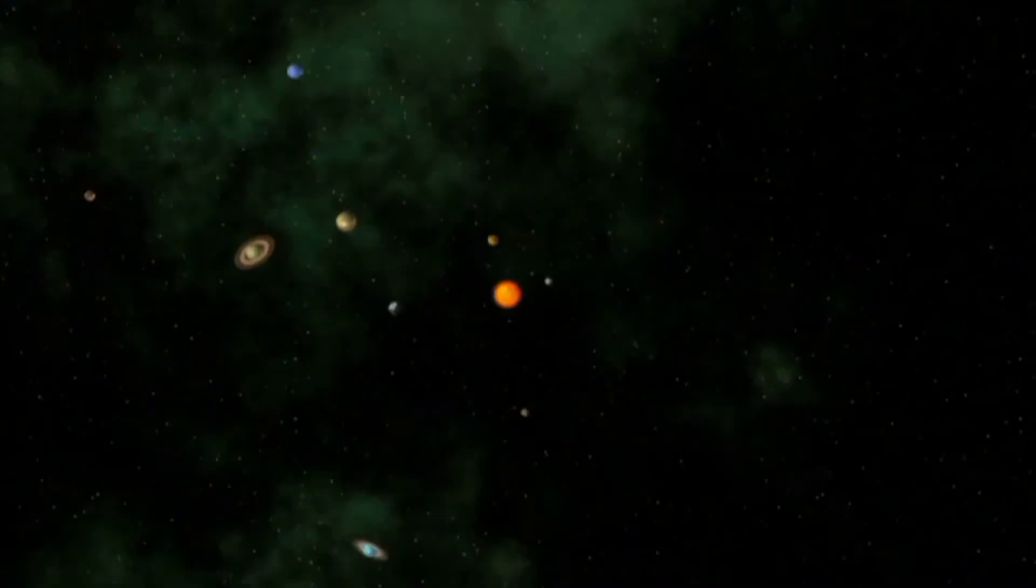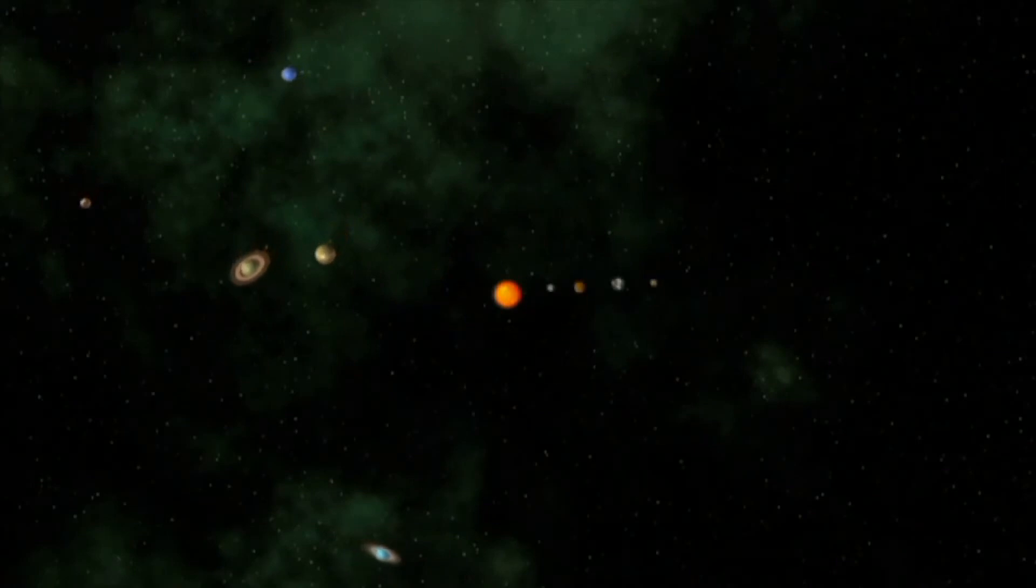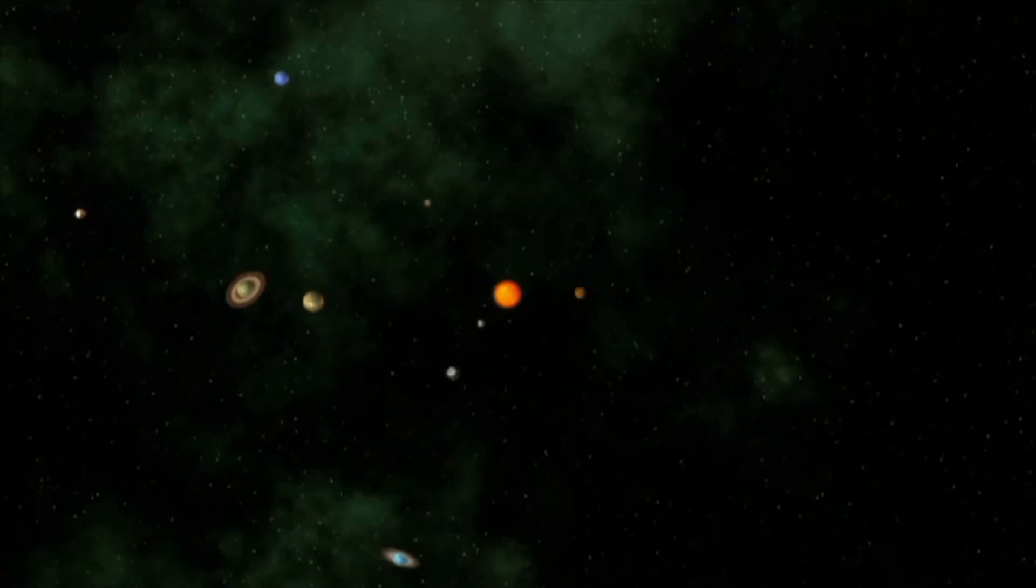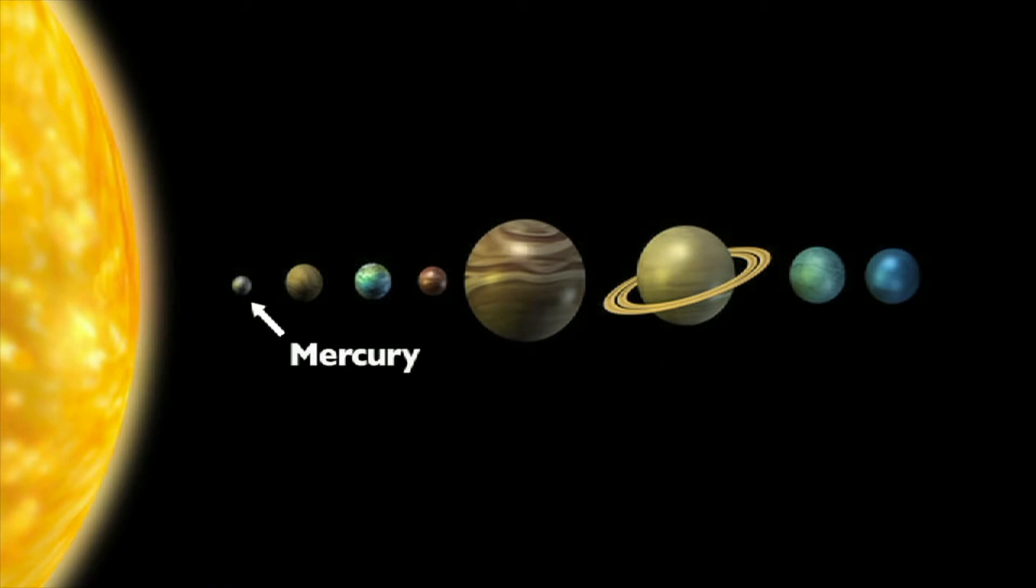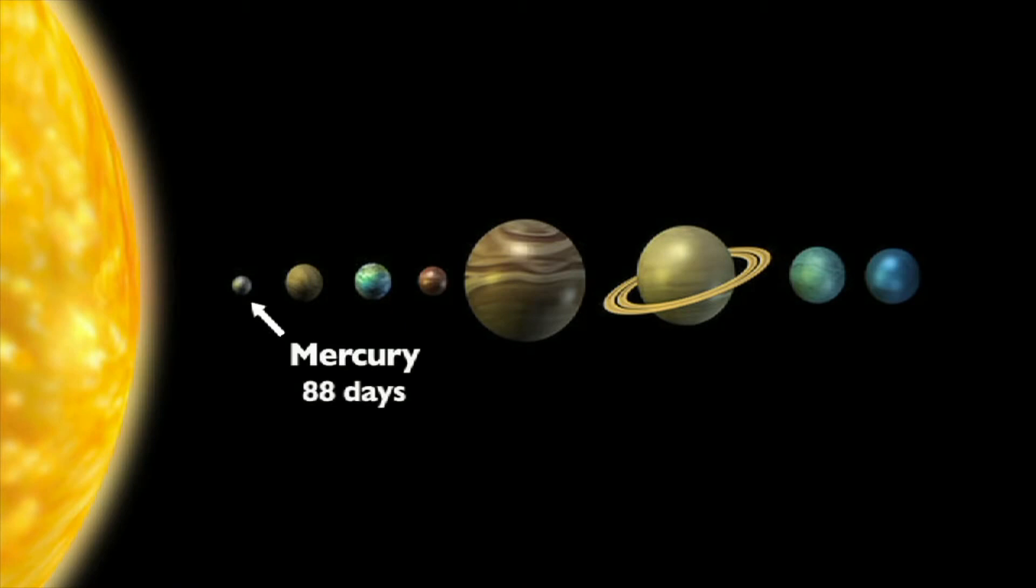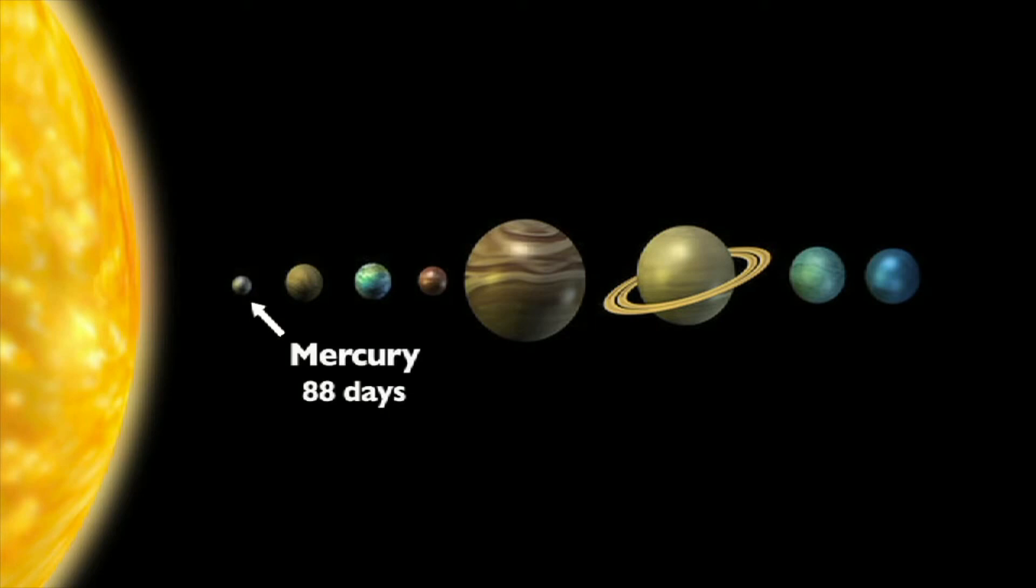Different planets in our solar system travel different distances around the Sun. Some of them, like Mercury, have shorter orbits because they are closer to the Sun. It takes Mercury only 88 days to complete its orbit around the Sun.